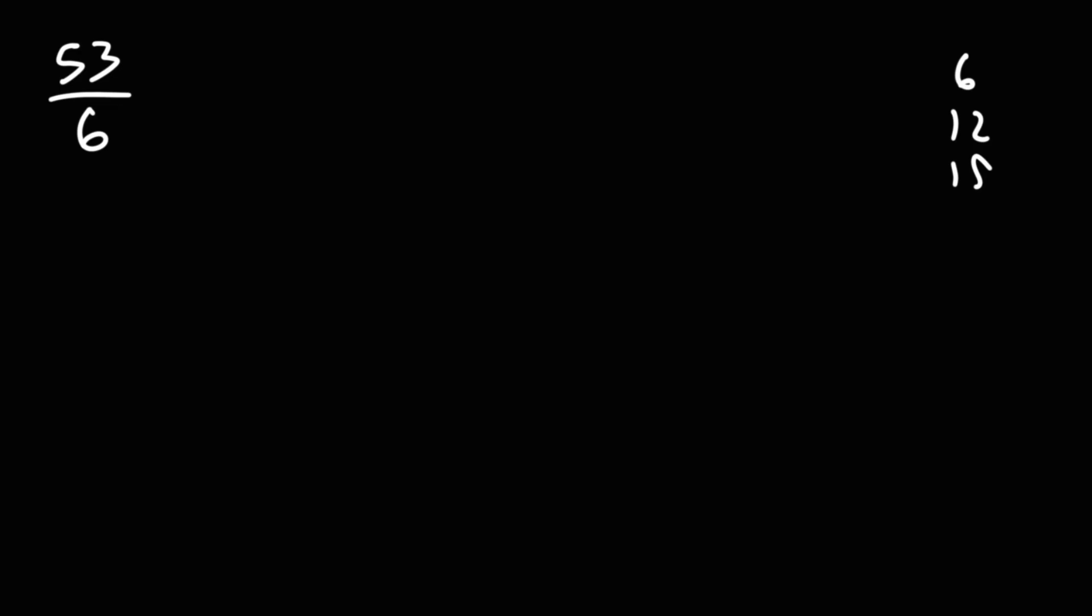Feel free to try this one, 53 over 6. Now, you might be wondering, what two numbers should I break down 53 into? What you want to do is find the highest multiple of 6, just under 53. So if you're not sure, you could list out the multiples of 6.